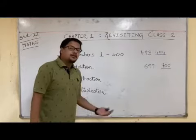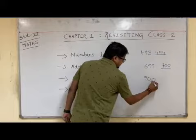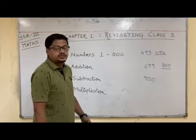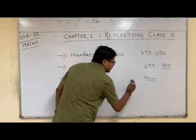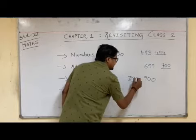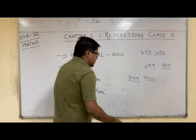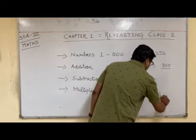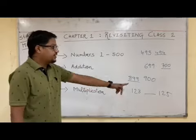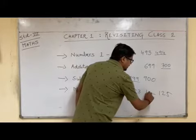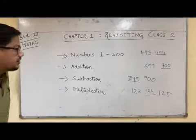Now let us learn about the concept of before number. Suppose I have the number 900. The before number is the number which comes before it. So the before number of 900 is 899. Now let us also see an example of a between number: 123 dash 125. What will come in the dash? 124. So this was after, before, and between number.